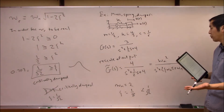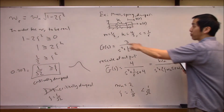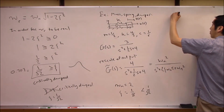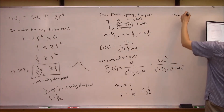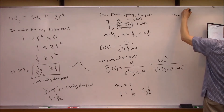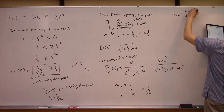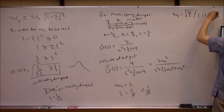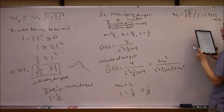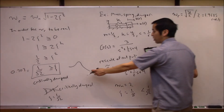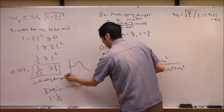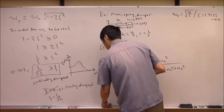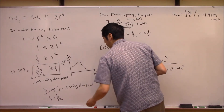Plugging into our expression ω_R = ω_n·√(1 - 2ζ²): we get a resonance frequency of √31 / (2√2), which is approximately 1.9685 rad/s. On our Bode plot, this is the peak — the frequency where you get maximum deflection.